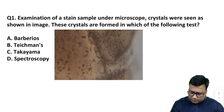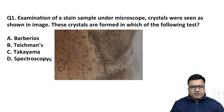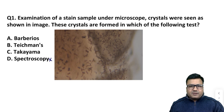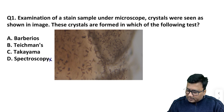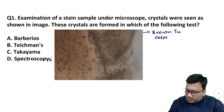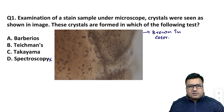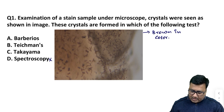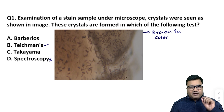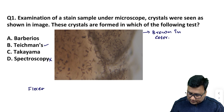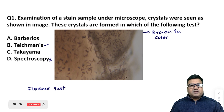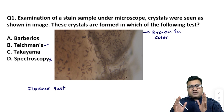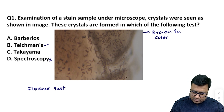Options पढ़ने के बाद spectroscopy तो वैसे ही out है because the question specifically says यह एक microscopic analysis है। Microscopic analysis में अगर हम देखे तो crystals brown in color हैं। Two tests which generate brown microscopic crystals are Teichmann's test (given in the option) and Florence test। Teichmann's test किया जाता है blood के identification के लिए और Florence test किया जाता है semen के identification के लिए। Florence test choice में नहीं है, तो correct answer हमारा होगा Teichmann's test।